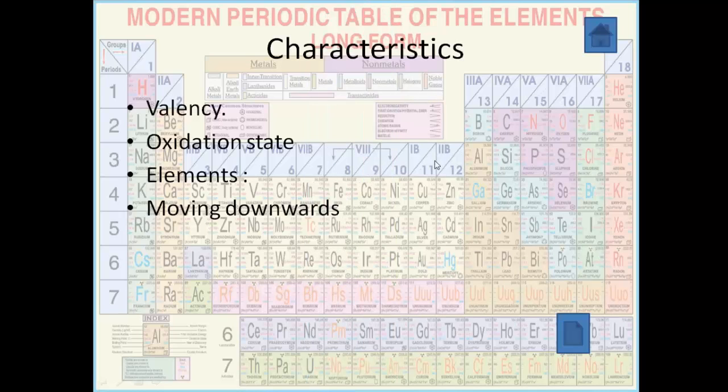Now let's understand the characteristics of this group under the main categories: valency, oxidation state, elements, and moving downwards.